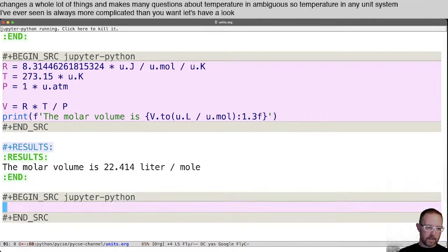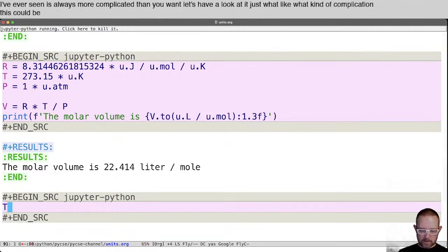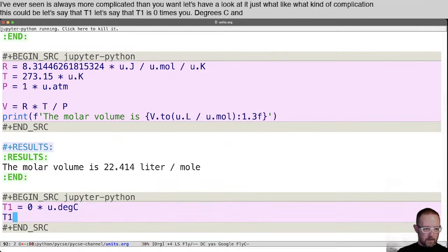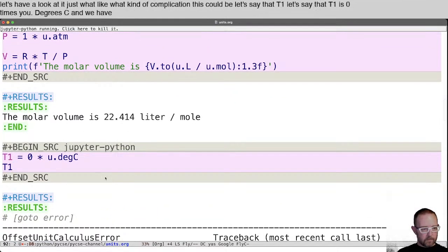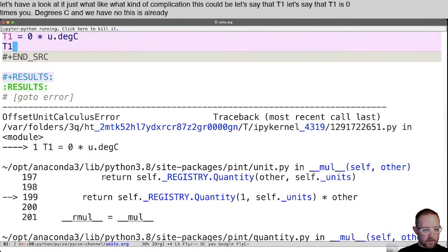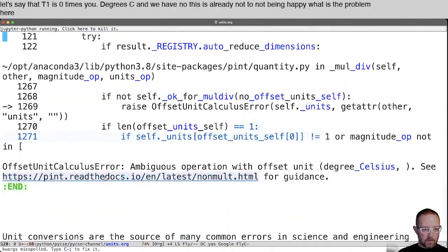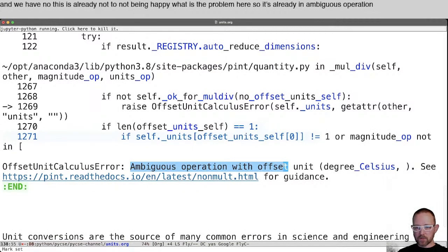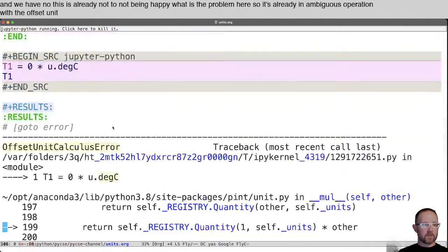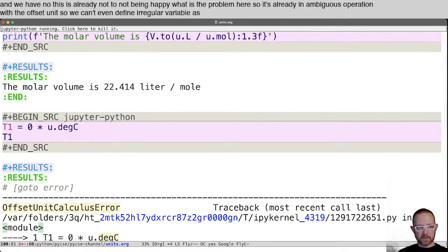Let's have a look at just what like what kind of complication this could be. Let's say that T one is zero times U dot degree C. Oh, this is already not being happy. What is the problem here? Oh, so it's already an ambiguous operation with the offset unit. So we can't even define a regular variable as zero degrees C.